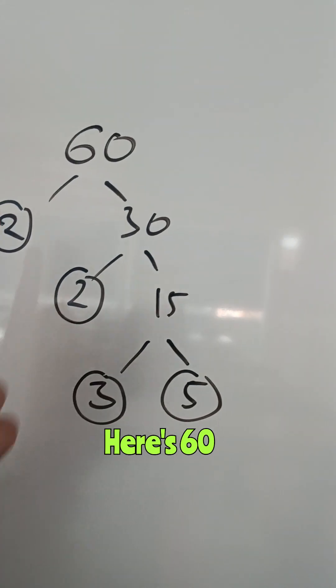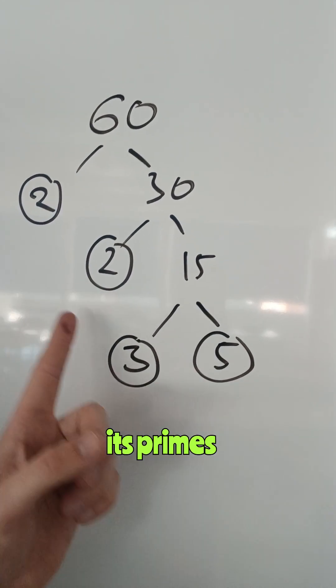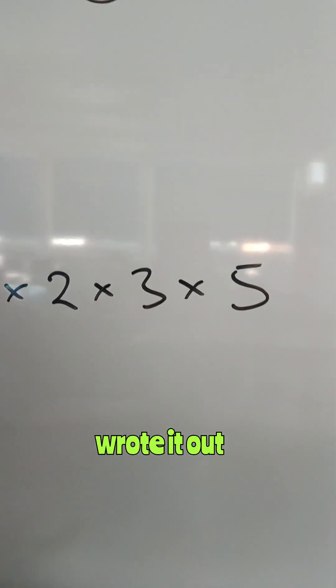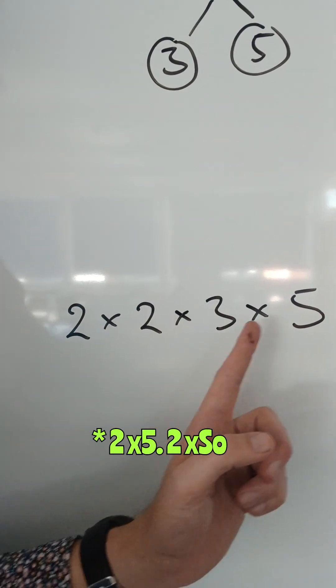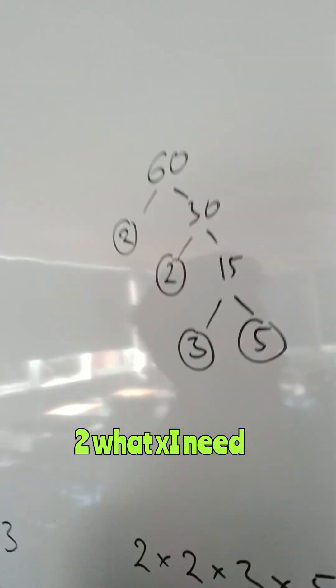Here's one I prepared earlier. Here's 60, broke it down as a product of primes with all of its primes circled. So I wrote it out as a list: 2 times 2 times 3 times 5.